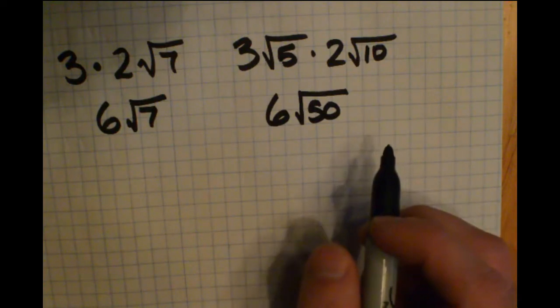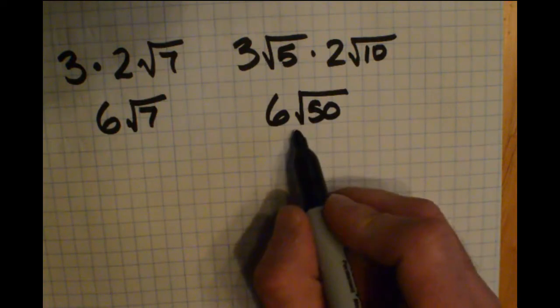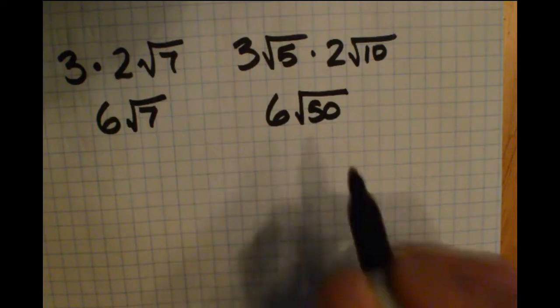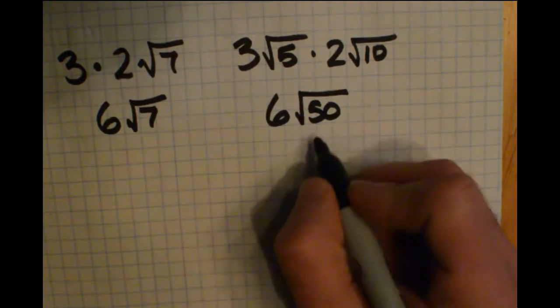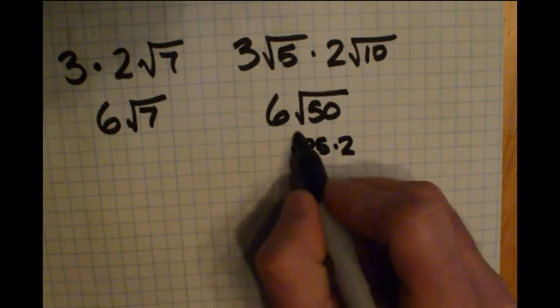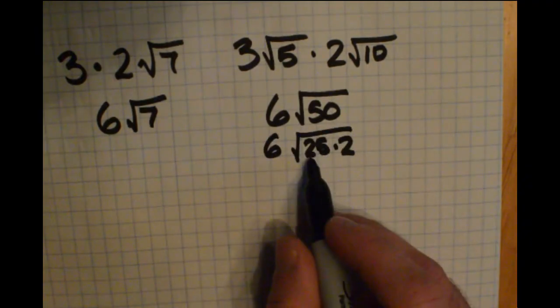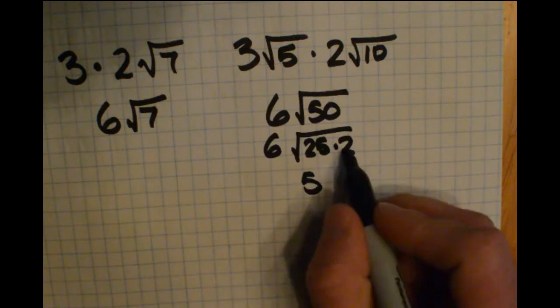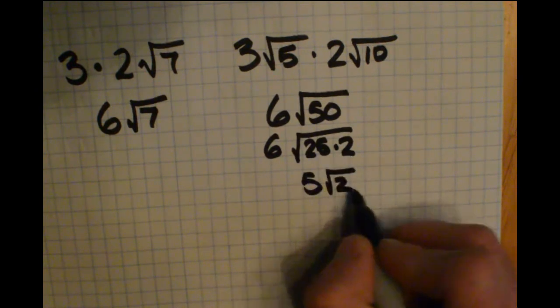Now we want to see if we can simplify this further. 50 has perfect squares that go into it that we can simplify. If you rewrite this as 25 times 2, you can take the square root of 25. Square root of 25 is 5. Square root of 2 is not a whole number, so we leave that as square root 2.